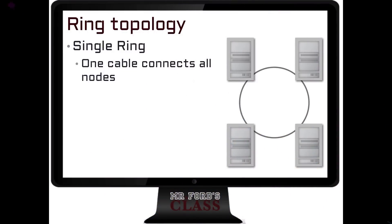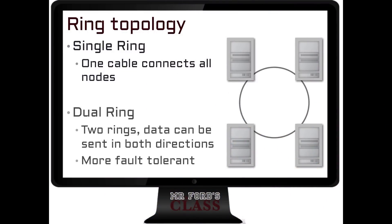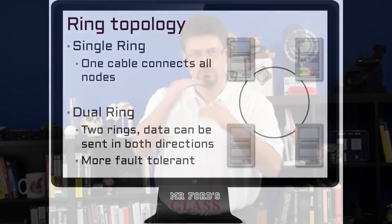The ring topology can either be a single ring or a dual ring. A single ring is one cable connecting all the nodes, while a dual ring has two cables connecting all the nodes. They're two separate rings and they can go in opposite directions with their communication. One of the good things about this type of setup is that they're more fault tolerant — so if one ring goes down, you still have the other ring.